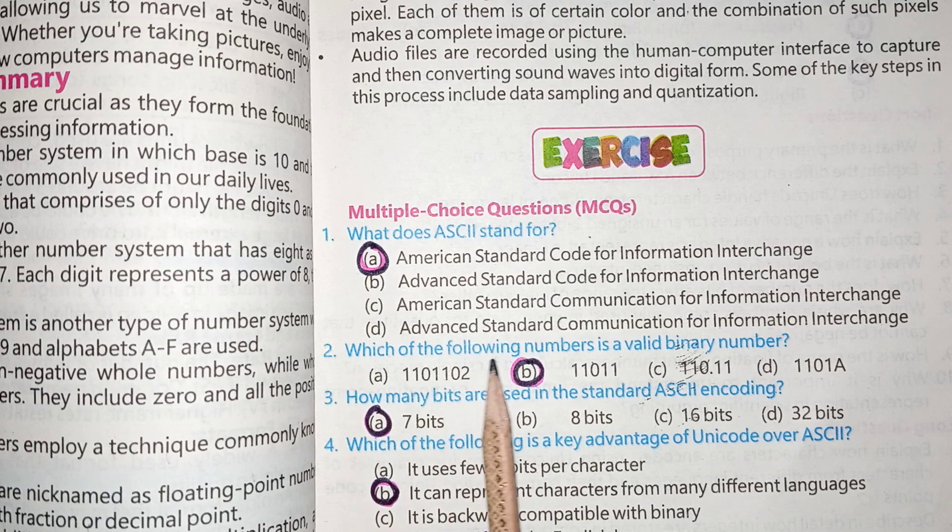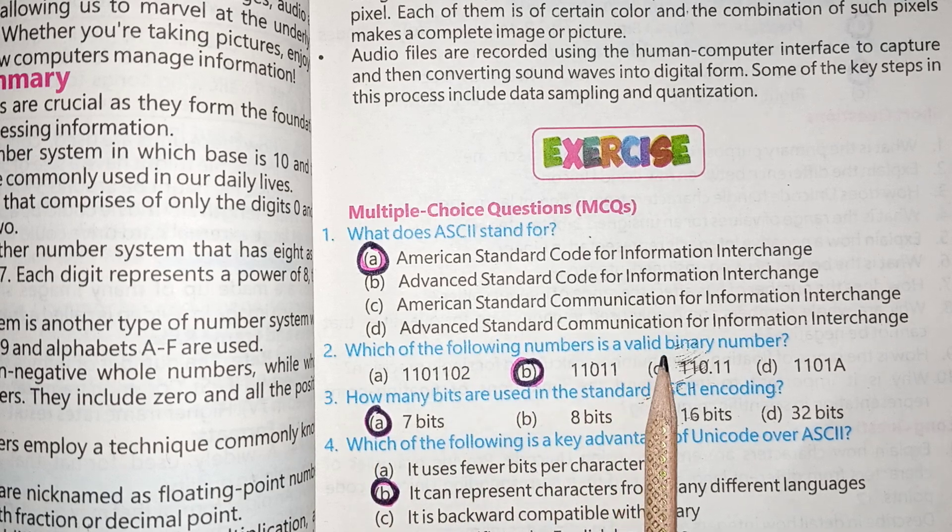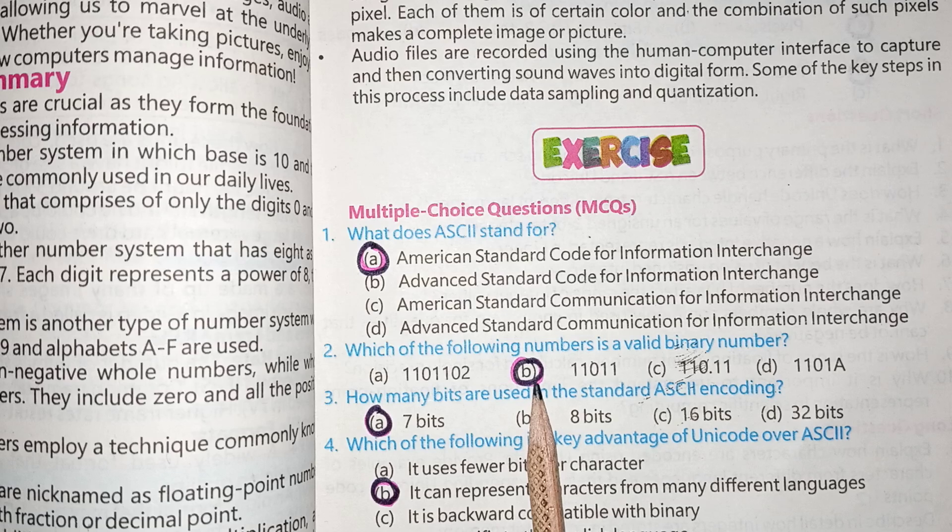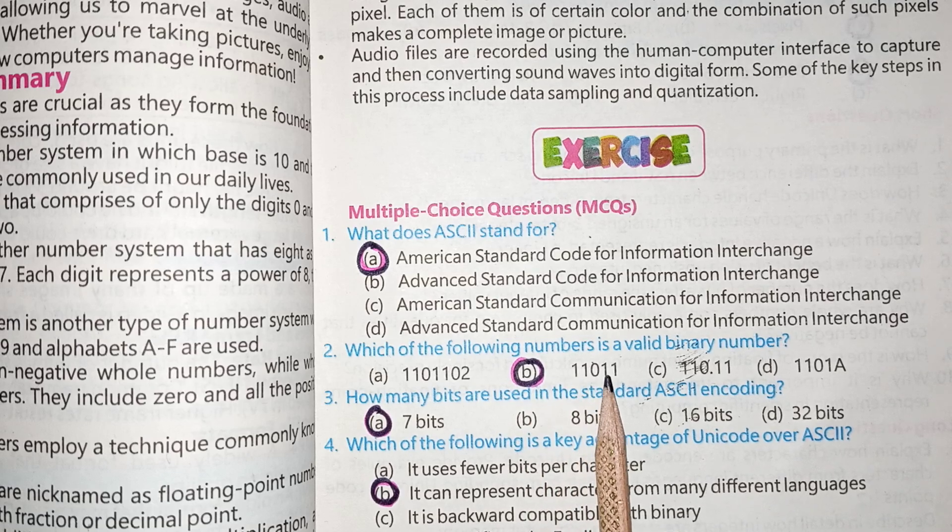MCQs No. 2, Which of the following numbers is a valid binary number? B is the correct option, 11011.